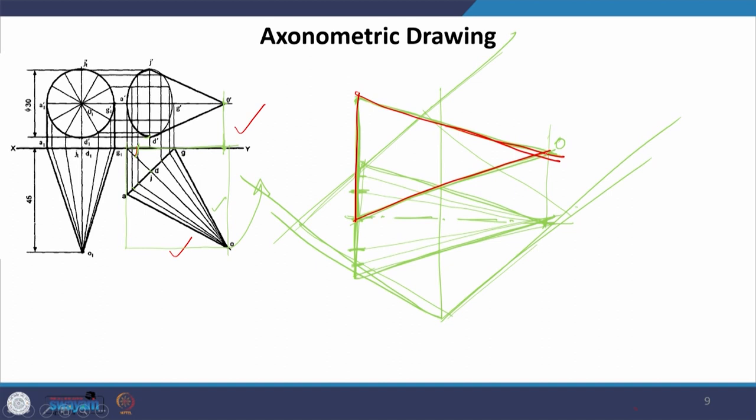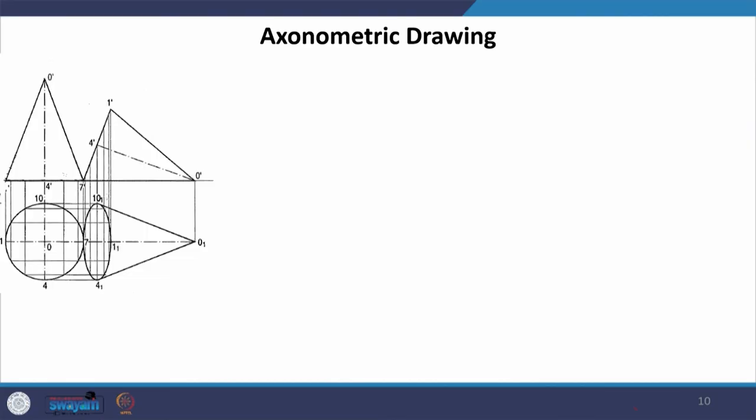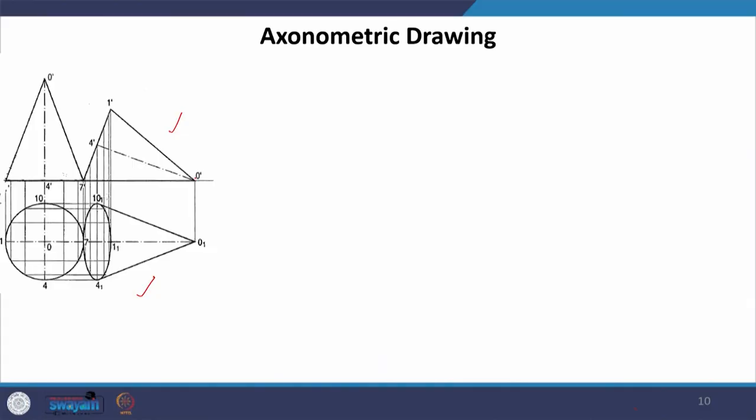I will show a couple more examples but will not draw them — I request you to draw them at home following the same procedure: draw the plan first, give heights to each point, and arrive at the final object. Try drawing this cone which is resting on one of its generators in the HP — you can assume the dimensions. In case you face any problem, you can come back and we will solve the query.